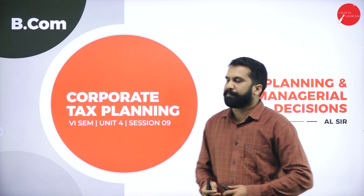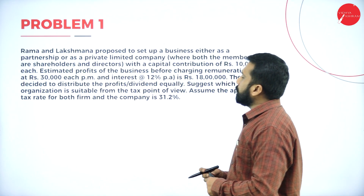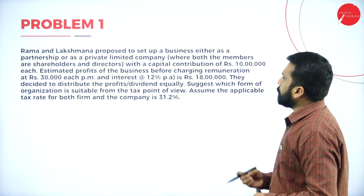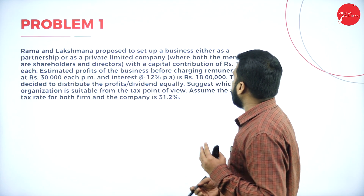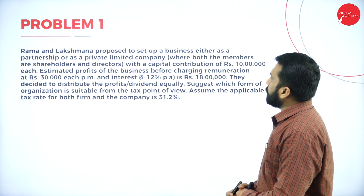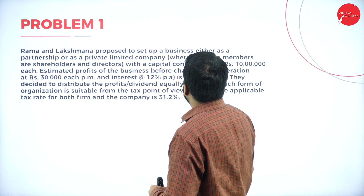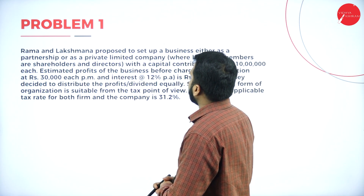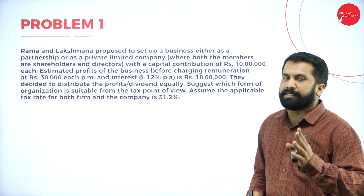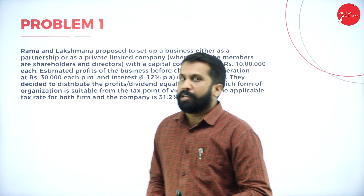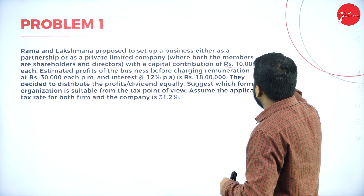Problem number one: the agenda is firm versus company. Rama and Lakshmana propose to set up a business, either as a partnership or a private limited company. Both members will be shareholders and directors if starting a company, or partners if starting a partnership firm.